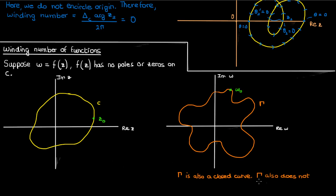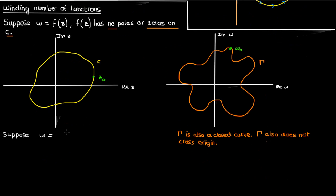In addition, the curve gamma will not cross the origin in the w plane. The reason for this is that f has no zeros on the contour c; therefore gamma, which is the image of c under f, does not cross the zero point — it does not cross the origin. Suppose that the polar representation of w is given by rho times e to the i phi, where rho is the distance of the w point from the origin in the w plane and phi is the angle relative to the positive real axis in the w plane. In that case, the argument of w would then just be phi.